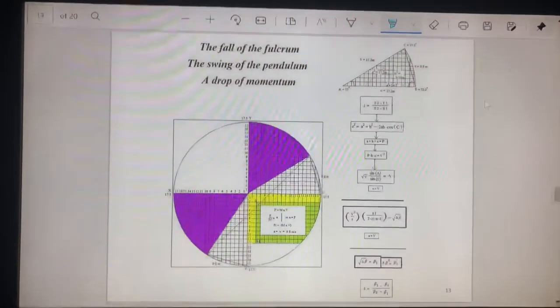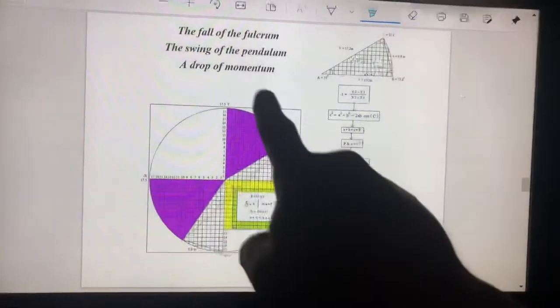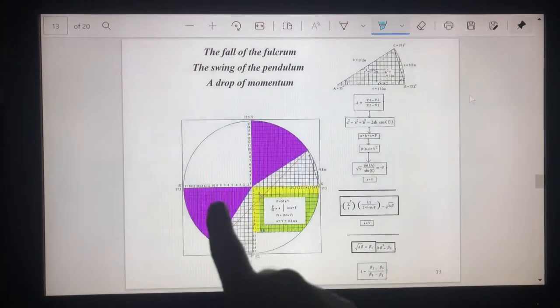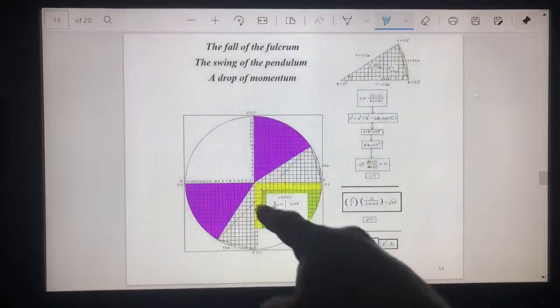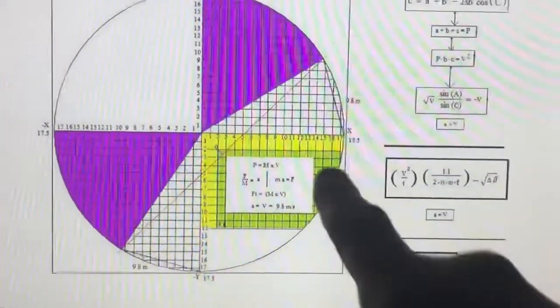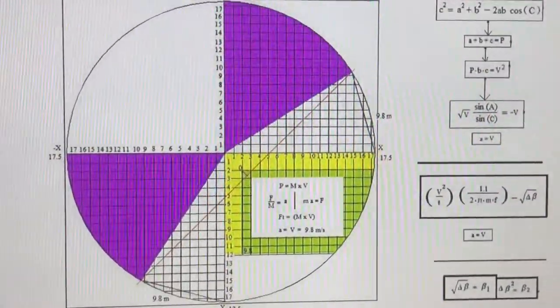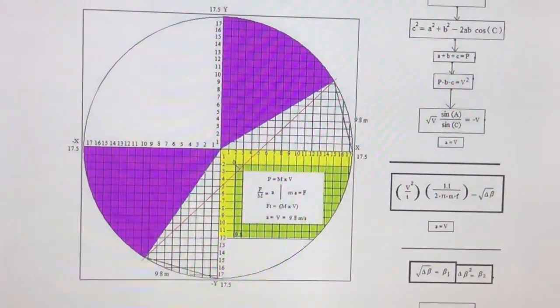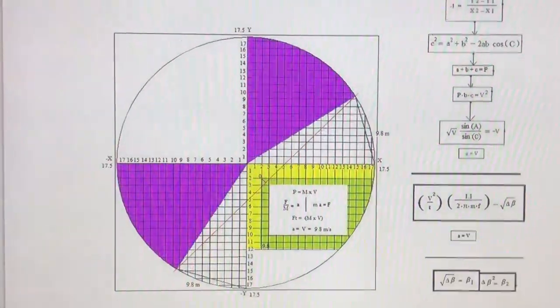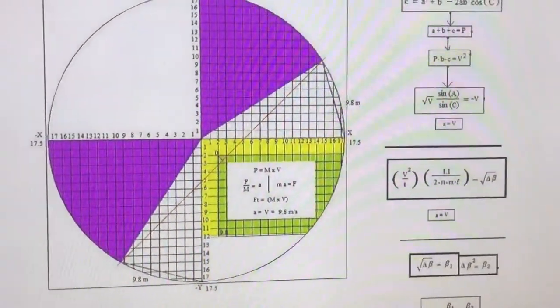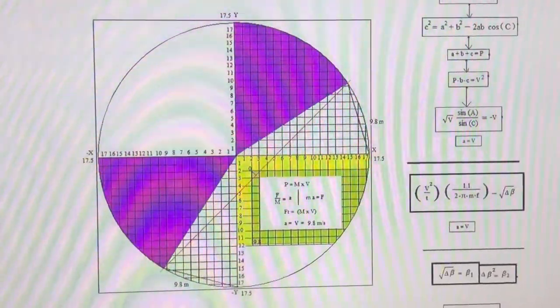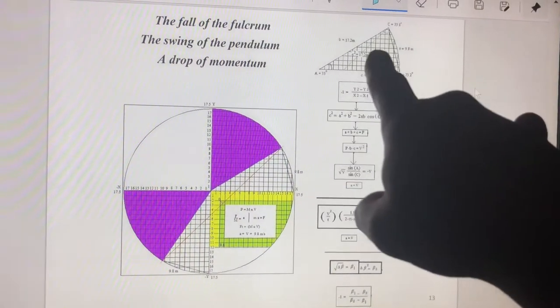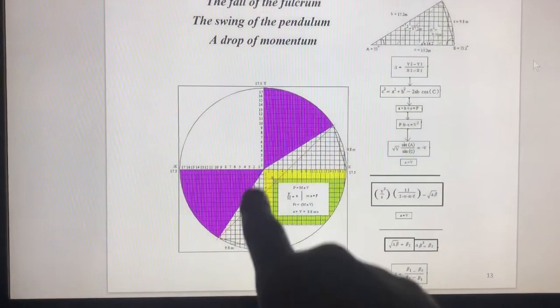I'm going to go ahead and come back up through all this real fancy trigonometry. So now, I'm going to explain this. You see how it says the fall of the fulcrum? You're going to look at this quadrant of this graph for the fulcrum. And then the swing of the pendulum is going to be this corner of the graph. And then a drop of momentum is going to be in this. And when you go look at the momentum formulas, it's going to look almost exactly like that. And when you go look it up, you can derive mv equals p from those equations right there. And you'll notice that gravity is actually Earth's velocity of momentum. It is not acceleration.